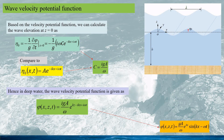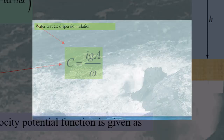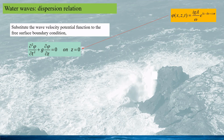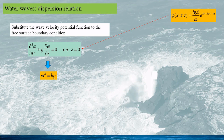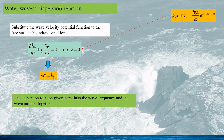This is the velocity potential function for a wave of amplitude A and frequency omega. Substituting the wave potential function into the free surface boundary condition, we obtain the dispersion relation, which links the wave frequency omega and the wave number k together. This is a very important relation for deep water waves, which can be used for determining the wavelength, wave propagation speed, and other wave properties.